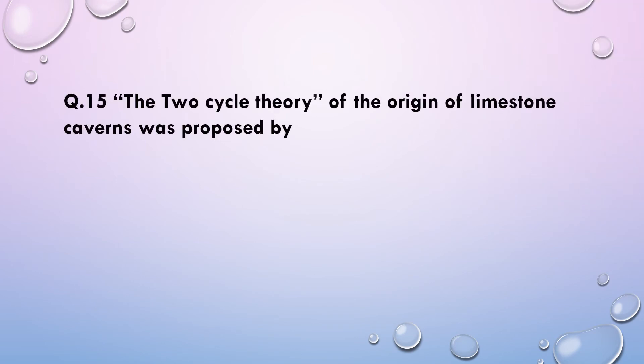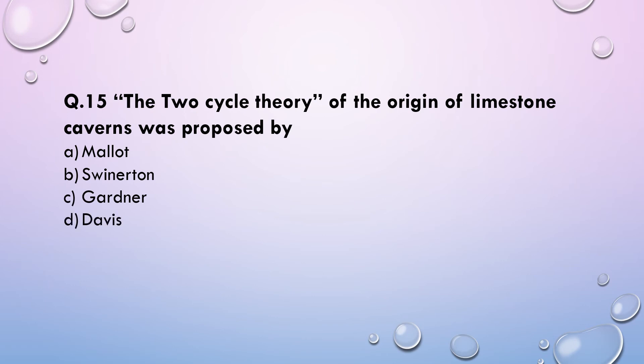Next question: The two-cycle theory of the origin of limestone caverns was proposed by — (a) Mallart, (b) Swinnerton, (c) Gardner, or (d) William Morris Davis. The correct answer is William Morris Davis.